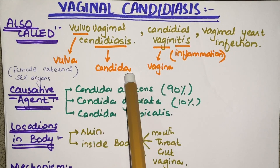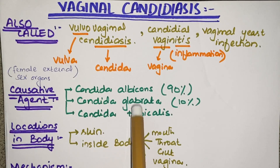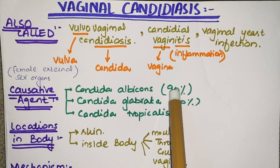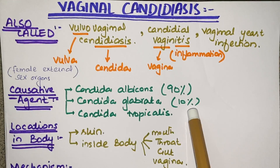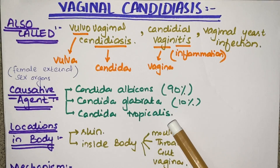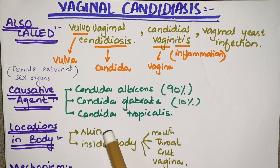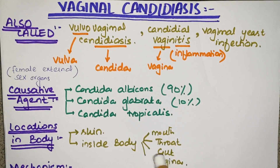The causative agents: it is very evident that it is because of Candida albicans. For the species, Candida albicans causes 90% of the disease, then 10% is because of Candida glabrata, and very few because of Candida tropicalis. This candida is also present in the body as normal flora — on the skin and inside the body in the mouth, throat, gut, and vagina.